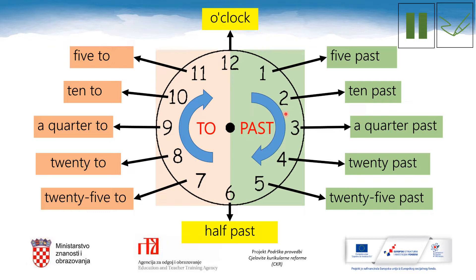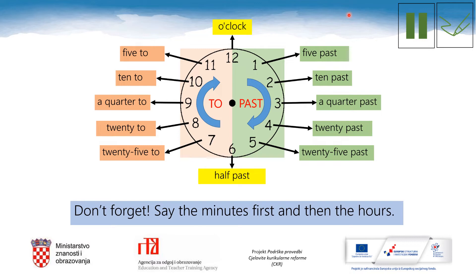When the big hand is on 3, we say a quarter past. When the big hand is on 6, we say half past. This is the green part — now it changes. We count how many minutes there are before the next hour. So we say 25 to, 20 to, a quarter to, 10 to, and 5 to. Say the minutes first and then the hour.